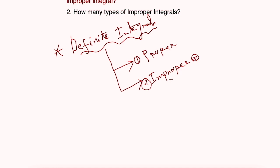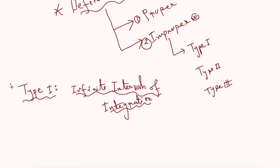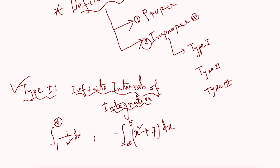To understand improper integrals, I am going to divide them into three types: Type 1, Type 2, and Type 3. Type 1 means infinite intervals of integration. For example, if your integration is from 1 to infinity of 1 over x squared dx, then the upper limit is infinity, so this integral is improper.